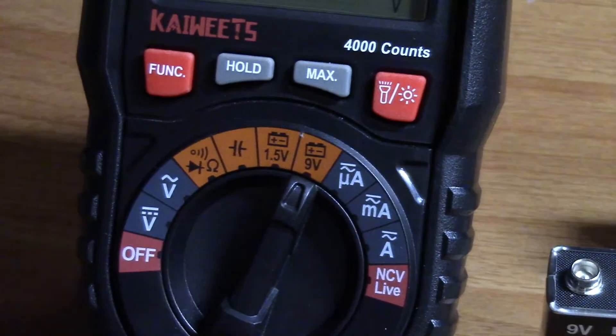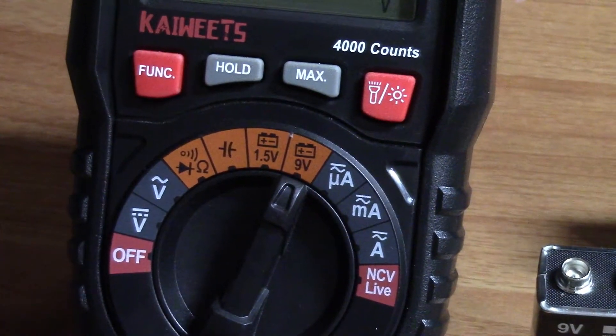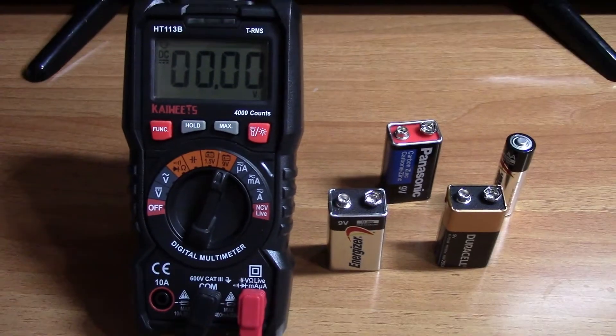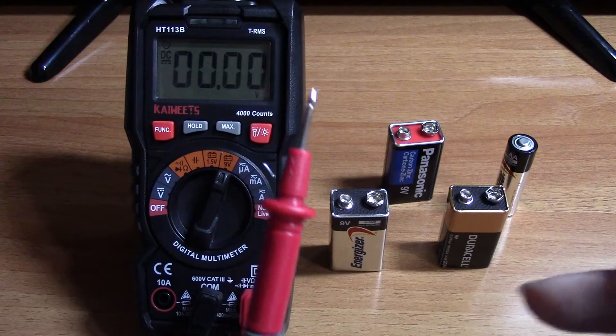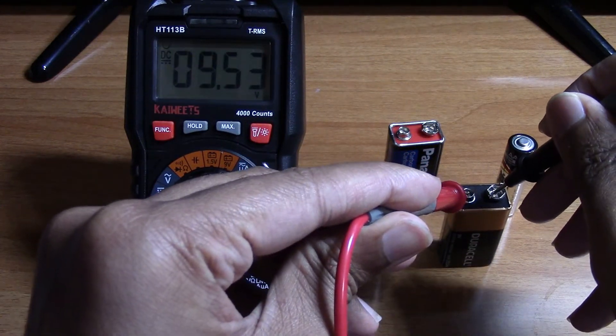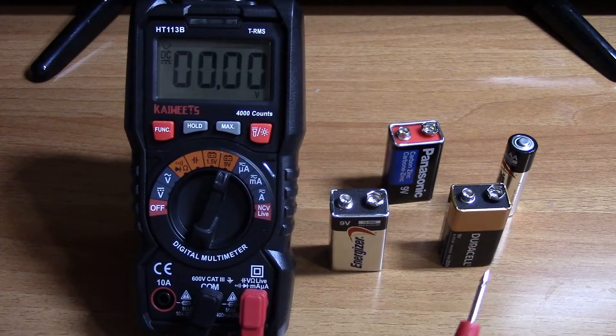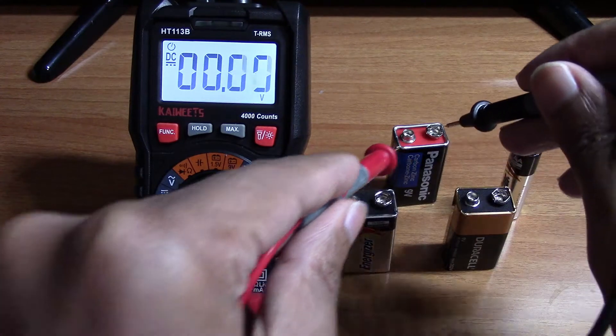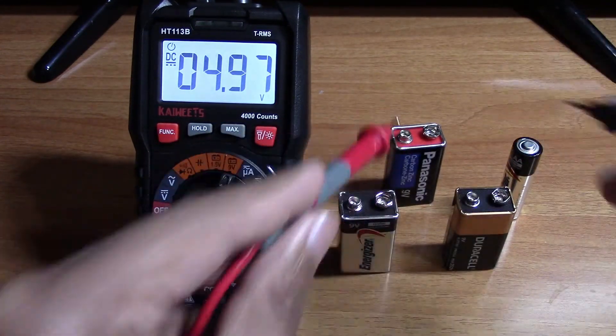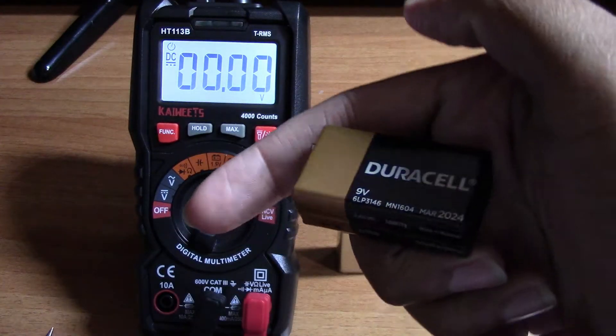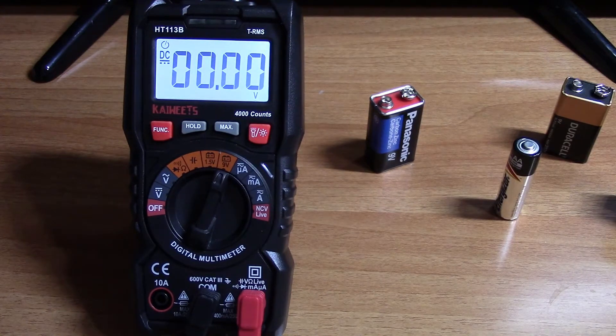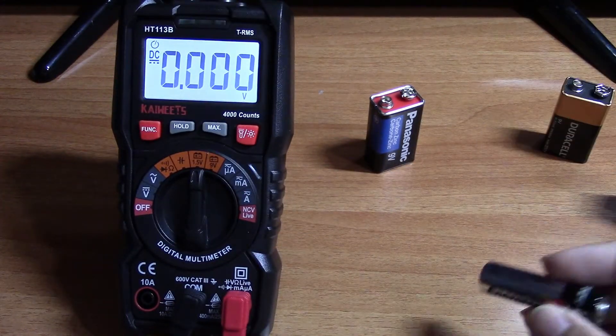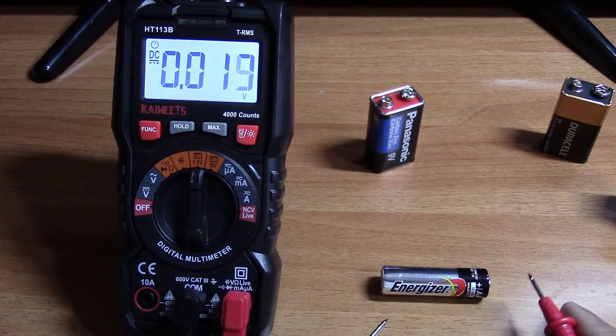The good thing about this multimeter is there's a battery selector. If you want to test batteries, there's an option for 9 volt and 1.5 volts. Let's test this, we have our tester probes and it reads 9.53. If you can't see it, turn on the light. 8.7, 9.53, these are all 9 volt batteries. If you want to test 1.5, you have your double A right here. Boom, 1.5.